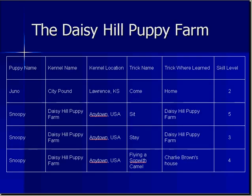Here's our data set. It's the famous Daisy Hill Puppy Farm example. We have information that we want to track about puppies and their names, the kennel they come from, the kennel location, the tricks they know, where they learn their tricks, and what the skill level is at performing that trick.